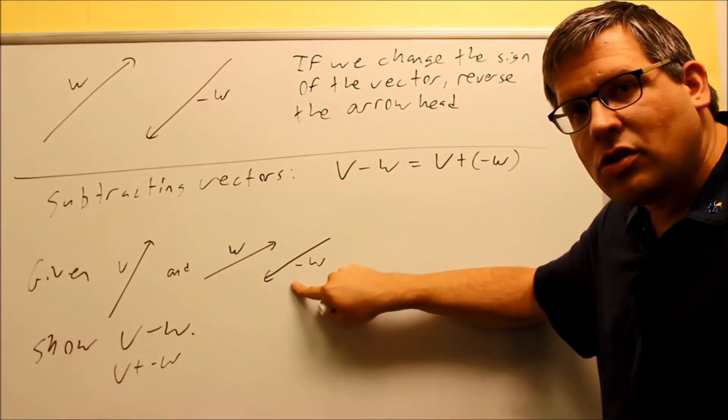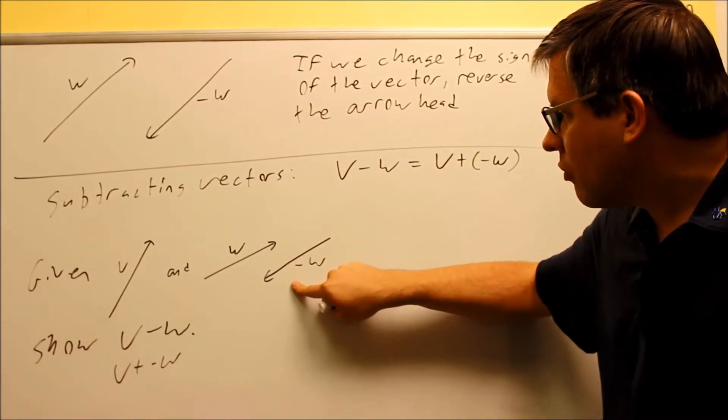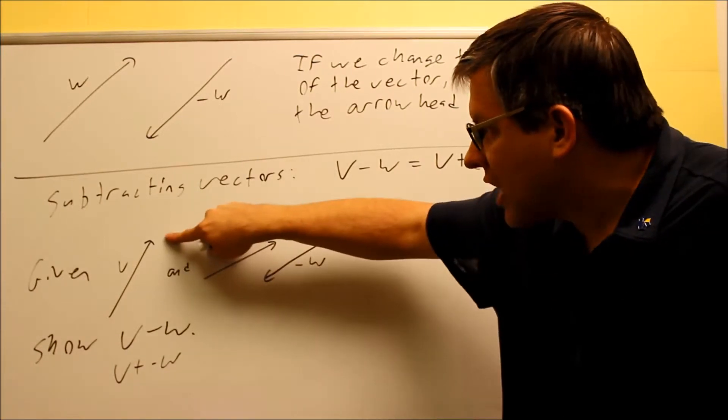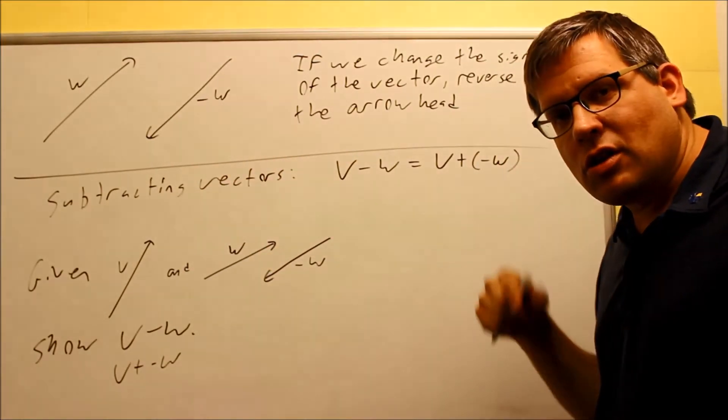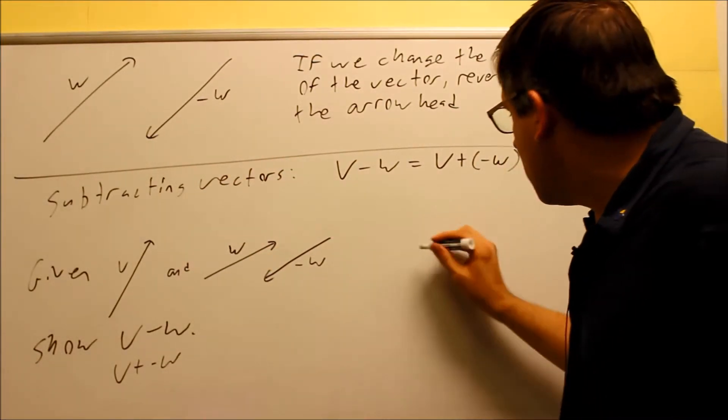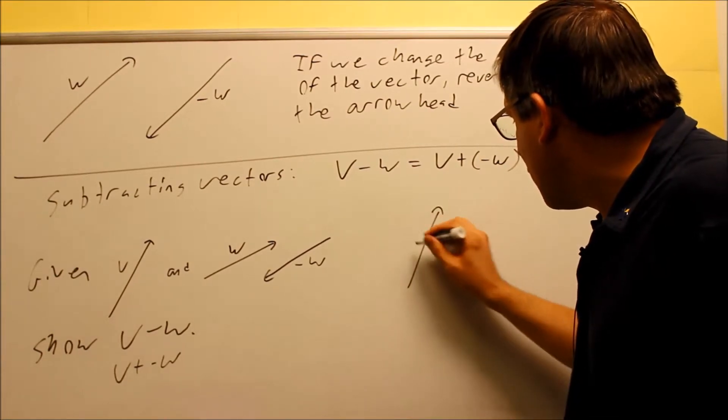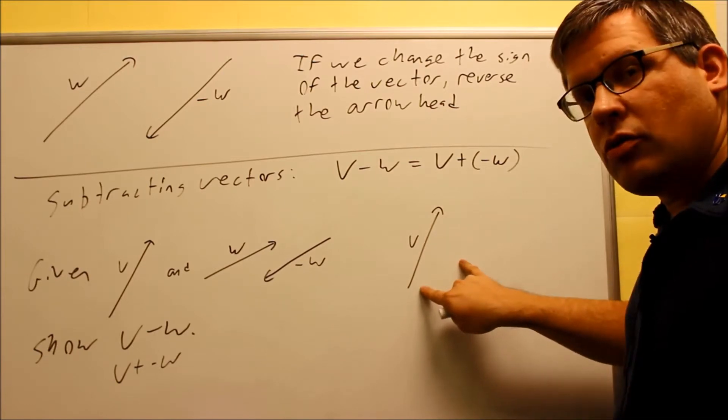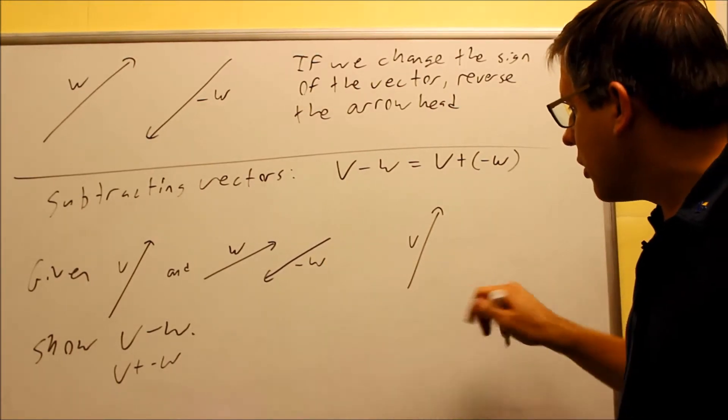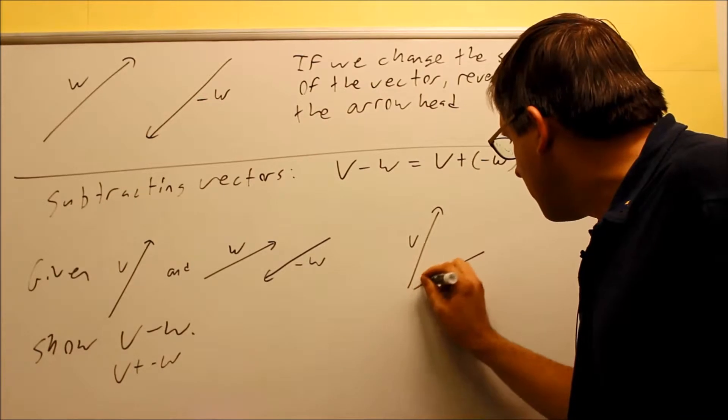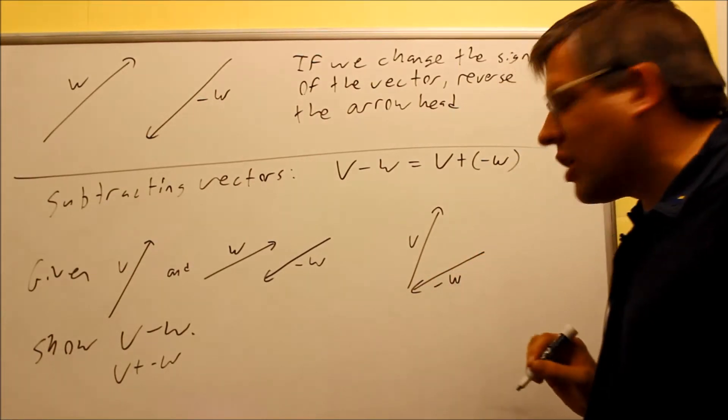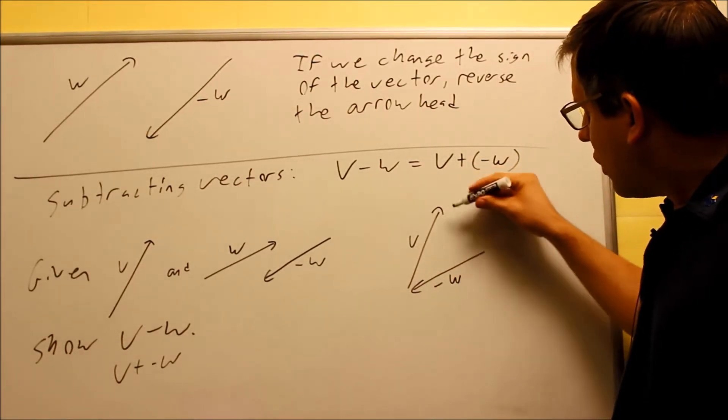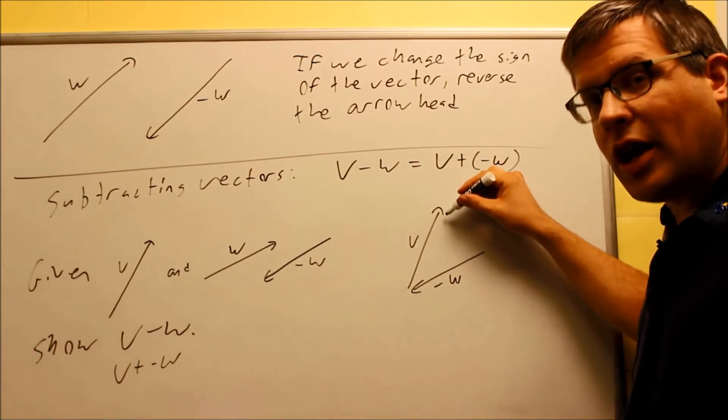Again, there's two ways of doing that. We have to make sure we add them tip to tail, which means I don't want to put this arrowhead on top of that arrowhead. They're both going together. That's the incorrect way. The correct way of doing it is here I'm going to go ahead and draw. Here is V, and then I'm going to take that one and move it right here. So if I move it over to here, then it's going to look like this. I have negative W looks like that, and then I'm going to draw a line from the starting point to the ending point.